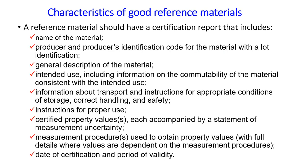Finally, a certified reference material should have a certification report that includes the name of the material, the producer and producer's identification code with a lot identification, general description of the material, intended use including information on commutability consistent with the intended use, information about transport and instruction for appropriate conditions of storage, correct handling and safety, instructions for proper use, certified property values each accompanied by a statement of measurement uncertainty, measurement procedures used to obtain property values with full details where values are dependent on the measurement procedures, and date of certification and period of validity.